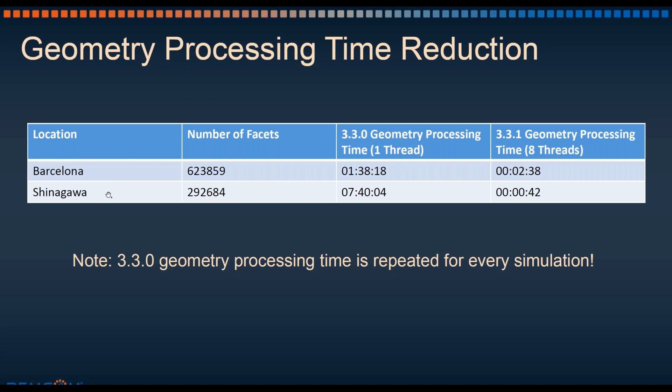Shinagawa is a neighborhood in Tokyo, so there are some larger buildings and some wider streets, some more complex geometry on those buildings. This version of our geometry had about 293,000 faces. In 3.3.0, it originally took 7 hours and 40 minutes to process the geometry. It now only takes 42 seconds in 3.3.1, running on 8 threads. It is also worth noting that in 3.3.0, geometry processing is required at the beginning of every simulation. So for Shinagawa, if you were to have 3 study areas, this 7 hours and 40 minutes would need to be repeated to process the geometry at the beginning of each of those simulations. Whereas in 3.3.1, it would process the geometry once in 42 seconds, and then the other study areas would read from the cache file, which would skip this step entirely.